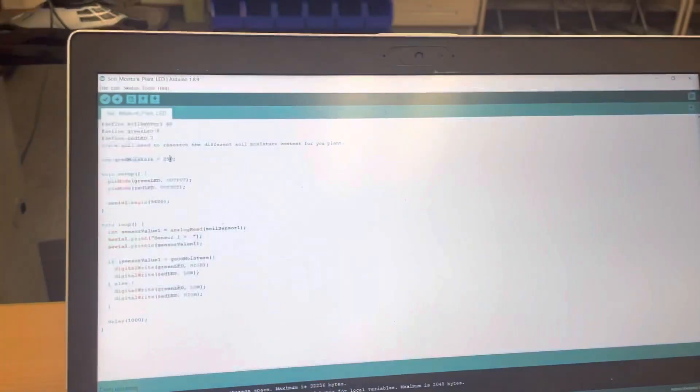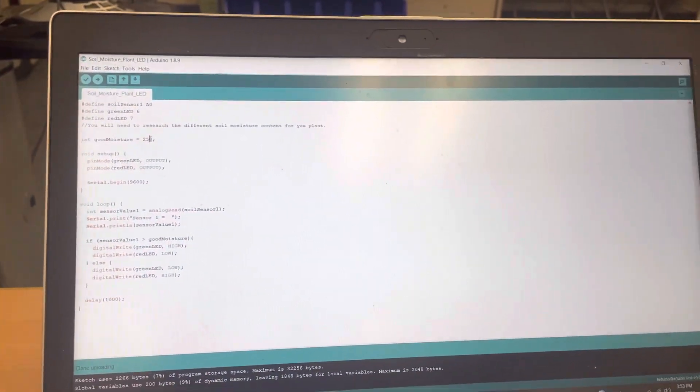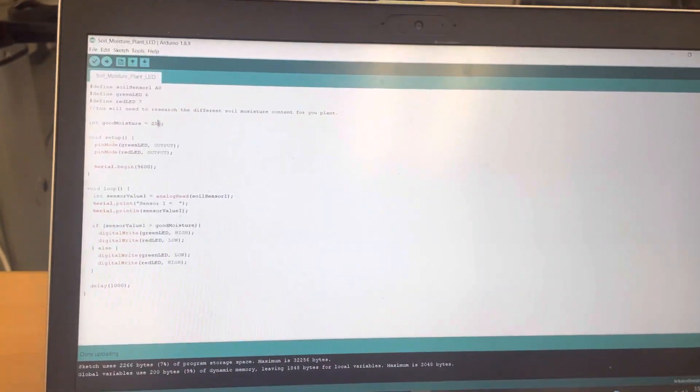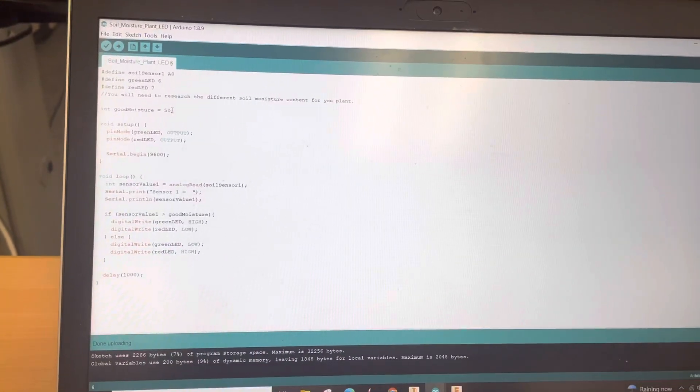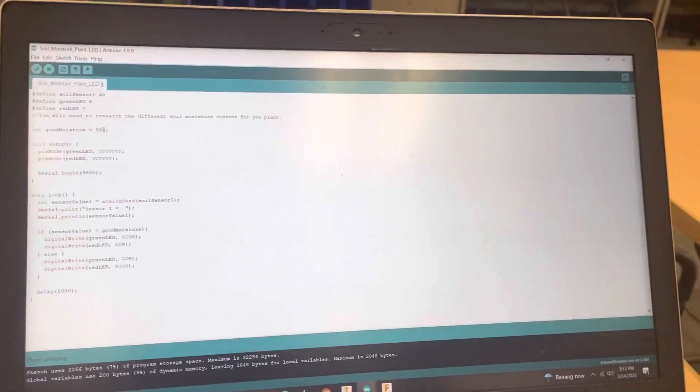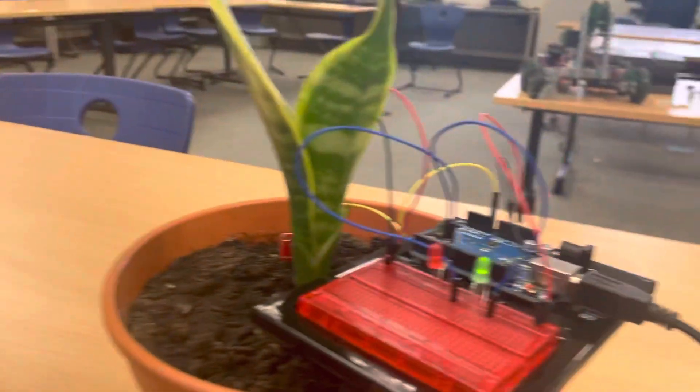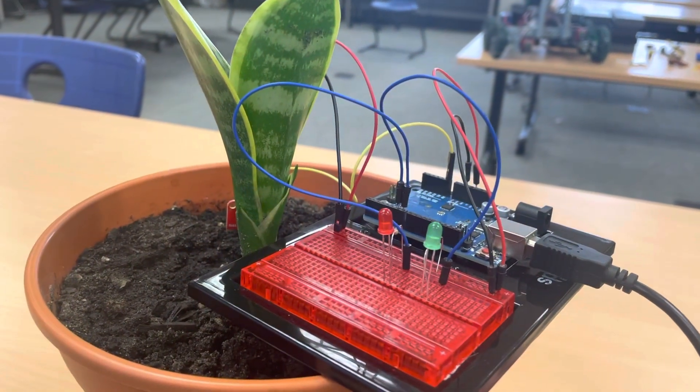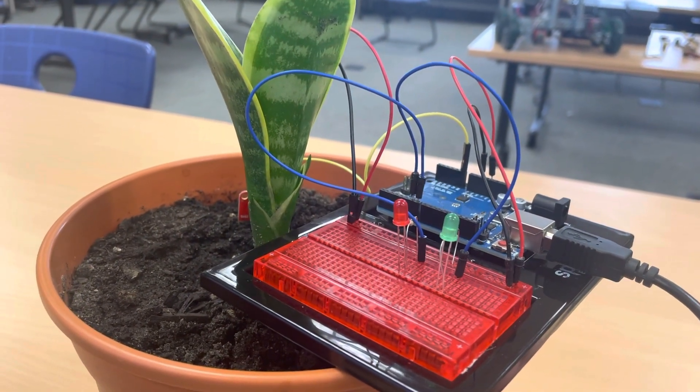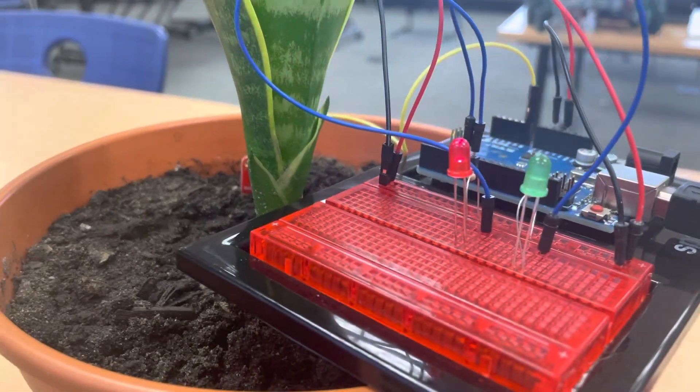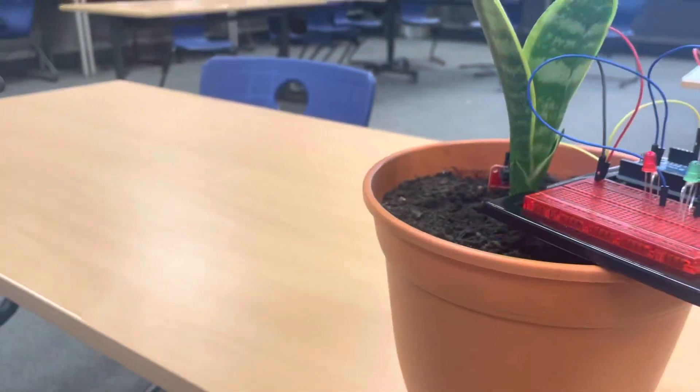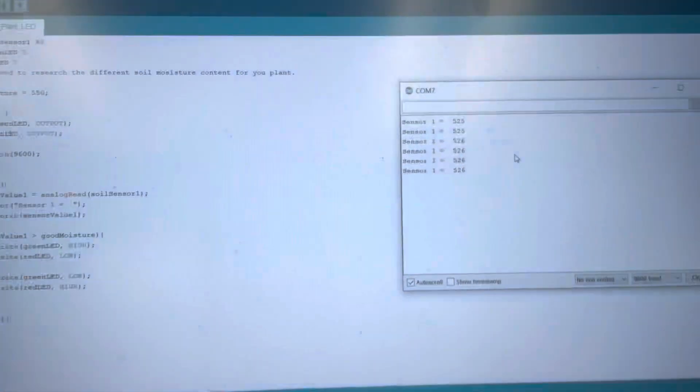Just to double check and make sure that the code works, I can change this good moisture content to something like 550 and then send the code to the Arduino. You can see that takes a second and all of a sudden the red light turns on. You can also use your numbers here and see that changing.